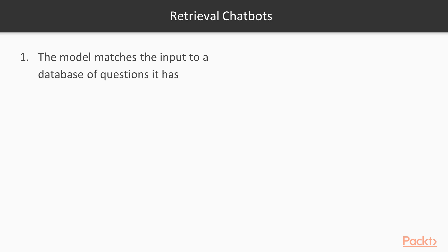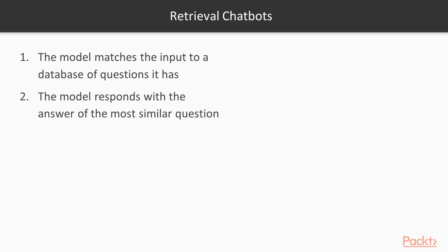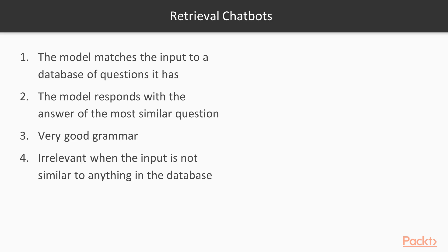Retrieval chatbots: in retrieval chatbots, the model matches the input to a database of questions it has. The model responds with the answer of the most similar question. Their answers have very good grammar. They are irrelevant sometimes when the input is not similar to anything in the database.